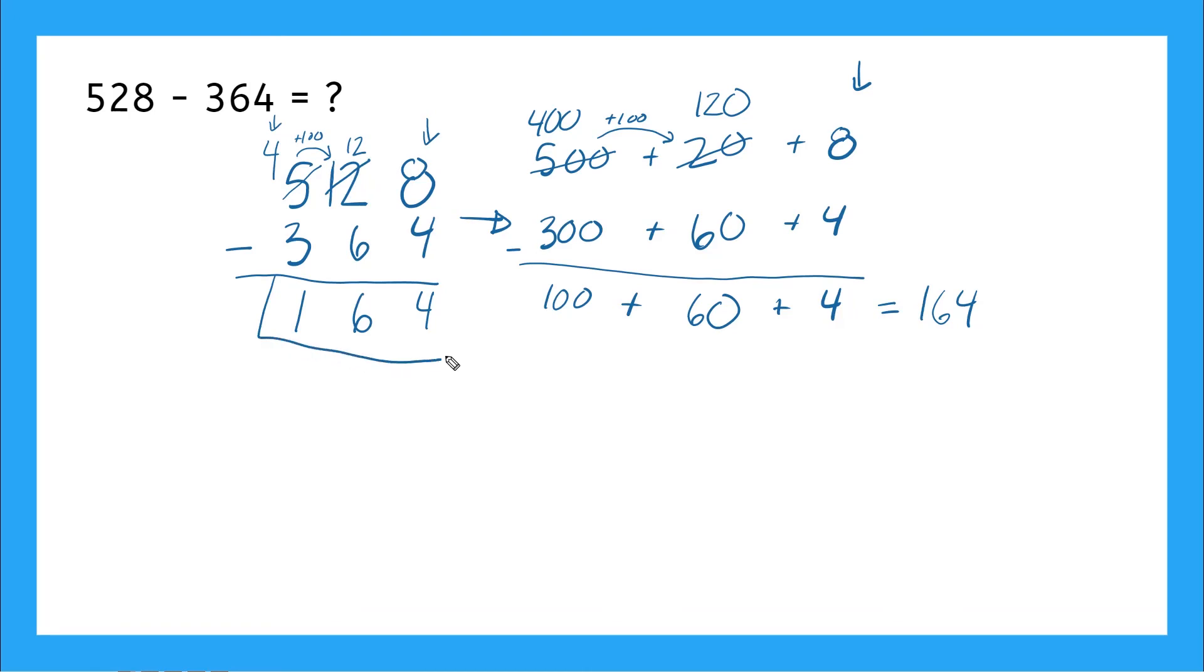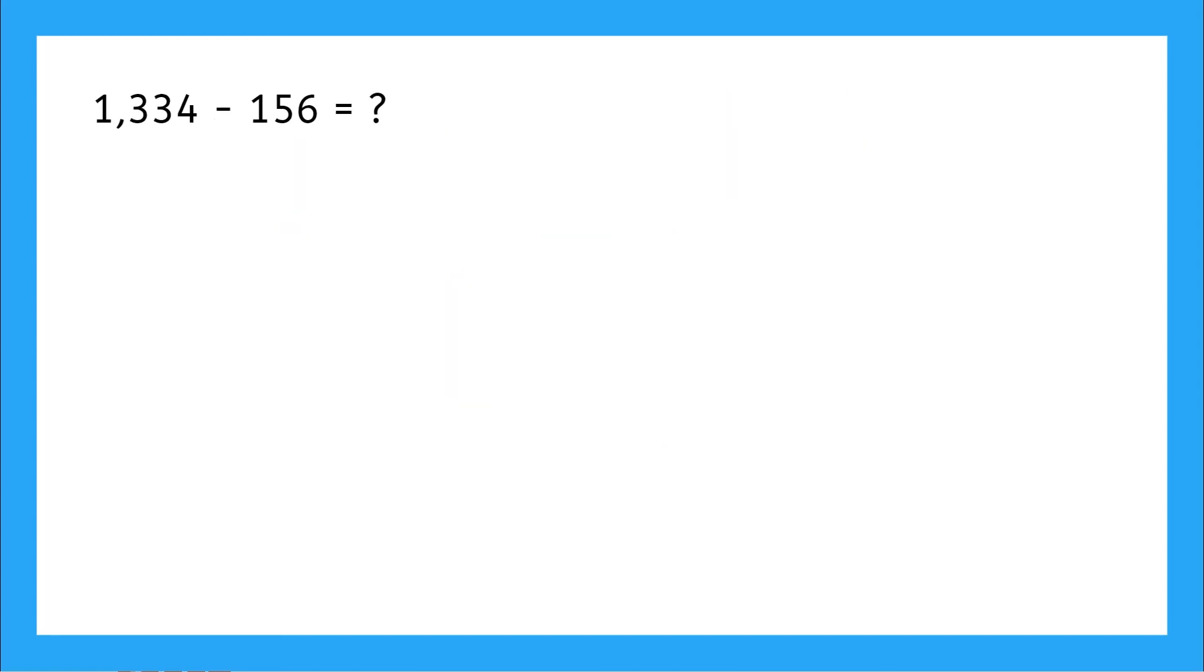And look at that. My 164 here matches my 164 from over here. Perfect. Okay. We have one more example altogether. This one says 1334 minus 156. So I have four digits here.